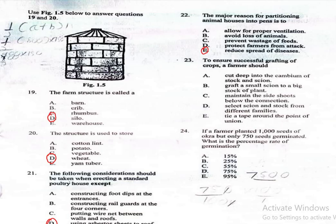Question 23. To ensure successful grafting of crops, a farmer should: A. Cut deep into the cambium of stock and scion, B. Graft a small scion to a big stock of plants, C. Maintain the side shoots below the connection, D. Select scion and stock from different families, E. Tie a tape around the point of union. The correct answer is option E, tie a tape around the point of union.